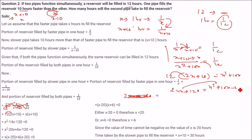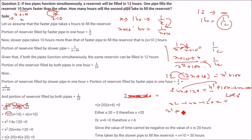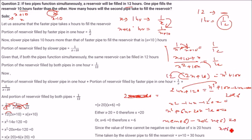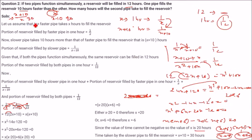Bringing both sides together: minus 24X minus 120. So X squared, then 10X minus 24X gives minus 14X, and minus 120 equals 0. Writing 120 as 20 into 6, and minus 14 as plus 6X minus 20X. Factoring: X times X plus 6, minus 20 times X plus 6 equals 0. So factors are X plus 6 and X minus 20. X equals minus 6 is rejected — time cannot be negative. So X equals 20 hours, and X plus 10 equals 30 hours.